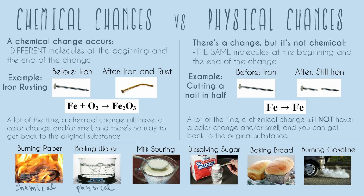Next, milk souring. This definitely has a smell, so it's definitely going to be a chemical change. There's no way to get back to the original substance — it has a color change and a smell. Once you've made sour milk, you're actually having a chemical reaction within the milk, making something that is now not the milk you had before. Definitely a chemical change.